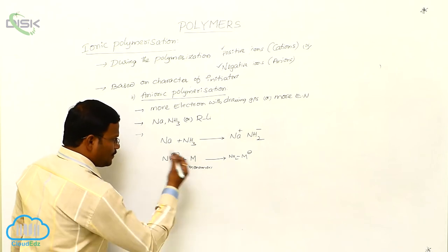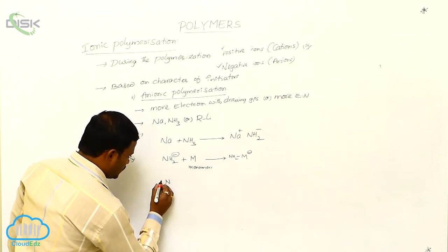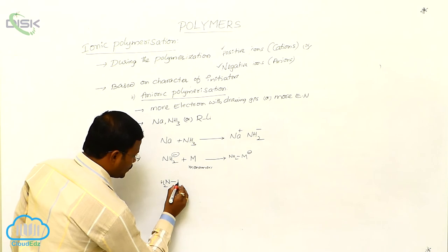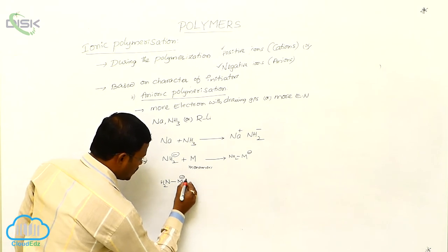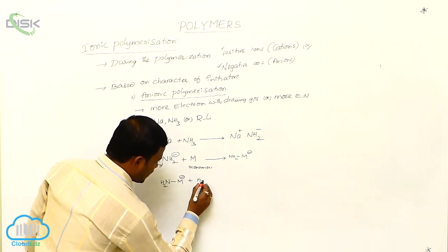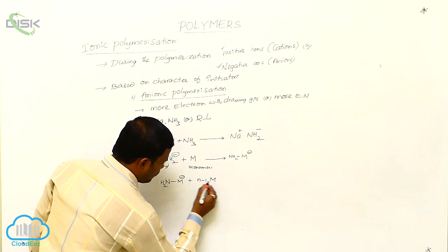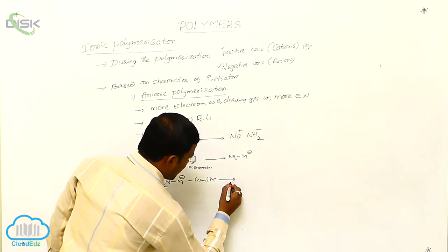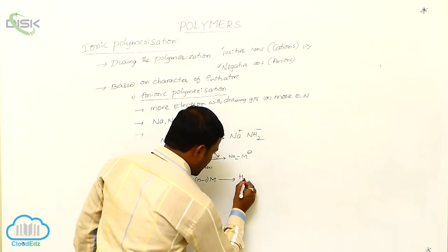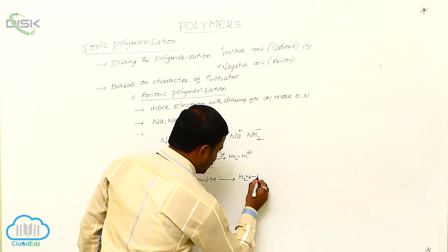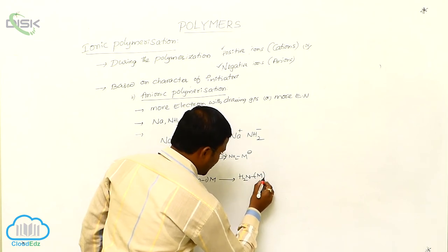In the next chain propagation step, this NH2 M minus is going to react with N minus 1 number of monomers and produces NH2 M minus N.